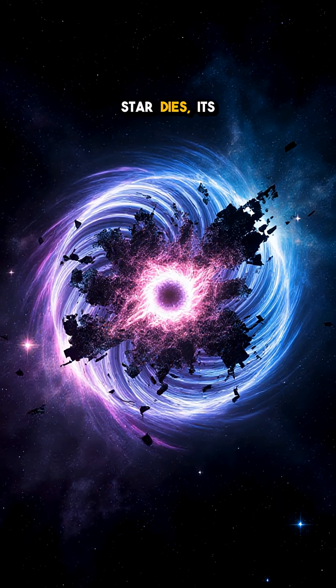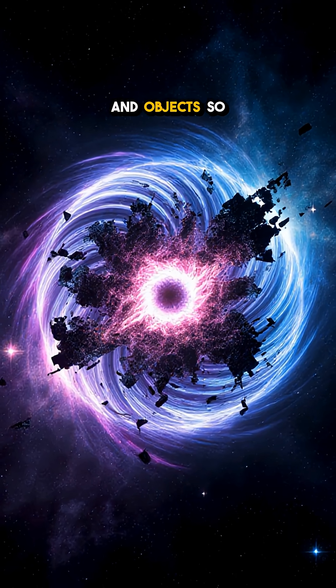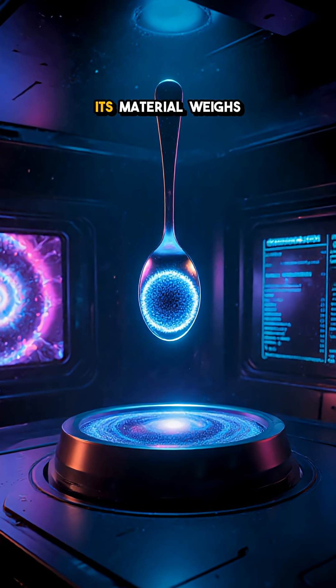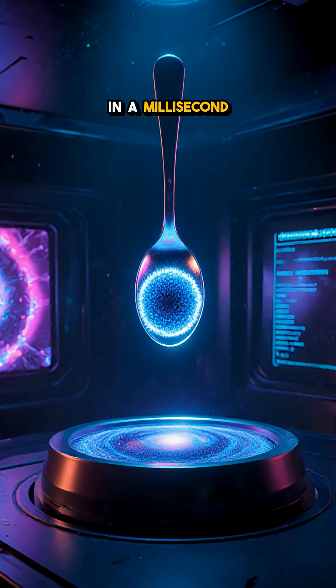When a massive star dies, its core collapses into a neutron star, an object so dense that a teaspoon of its material weighs a billion tons. In a millisecond pulsar,